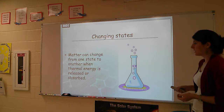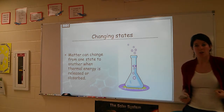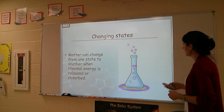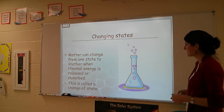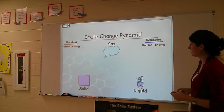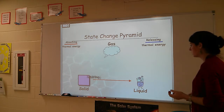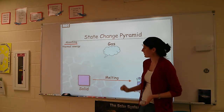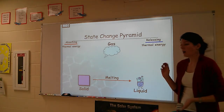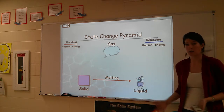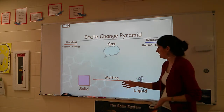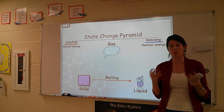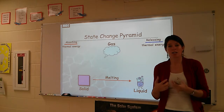Matter can change state when thermal energy is released or absorbed. Thermal energy is heat, so we're not going to absorb cold — that's a really common misconception. When matter changes state, let's say solid goes to liquid, we call that melting. A red arrow tells you that we are absorbing thermal energy, and a blue arrow tells you that we're releasing thermal energy. If we go from a solid, like ice, to a liquid, like water, we're melting. What's really happening on the atomic level is that energy is being absorbed, and those particles start to move further apart — they have more kinetic energy, they're moving faster, and their attraction is less strong.